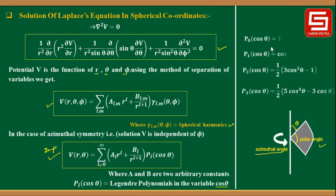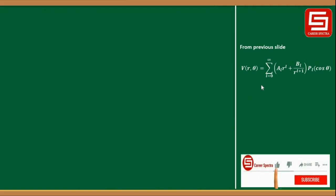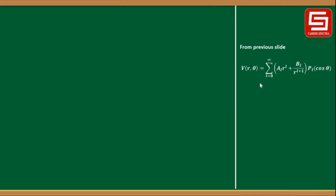V(r,θ) = Σ (l=0 to ∞) [A_l r^l + B_l / r^(l+1)] P_l(cosθ), where A_l and B_l are two arbitrary constants and P_l(cosθ) is a Legendre polynomial in the variable cosθ. The polynomials are: P₀(cosθ) = 1, P₁(cosθ) = cosθ, P₂(cosθ) = (1/2)(3cos²θ − 1), and P₃(cosθ) = (1/2)(5cos³θ − 3cosθ). You need to remember P₂ and P₃.